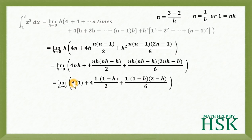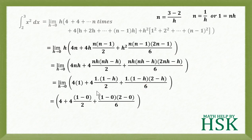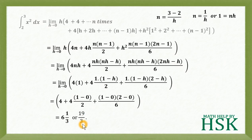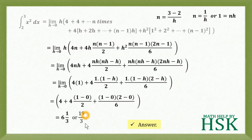Now applying the limit by placing h equals 0, we get 4 plus 4 times 1 half plus 1 times 2 upon 6, which simplifies to 4 plus 2 plus 1 third, giving 19 upon 3 as the required answer. The calculation gives 4 plus 2 equals 6 plus 1 third, so the final answer is 19 by 3.